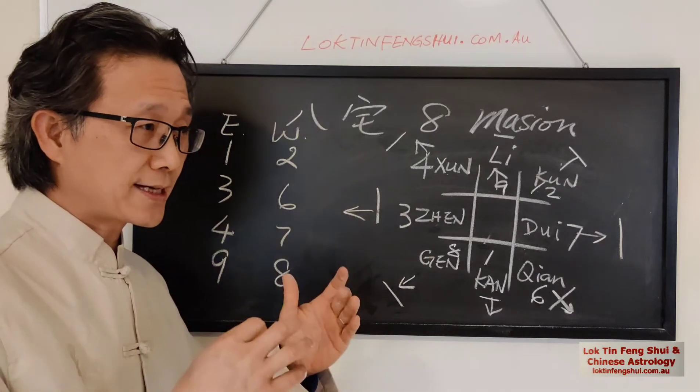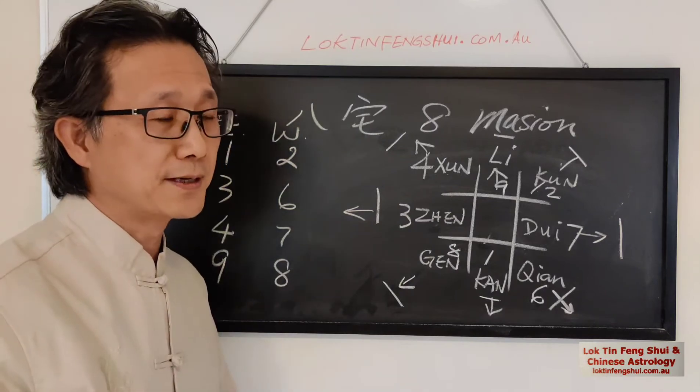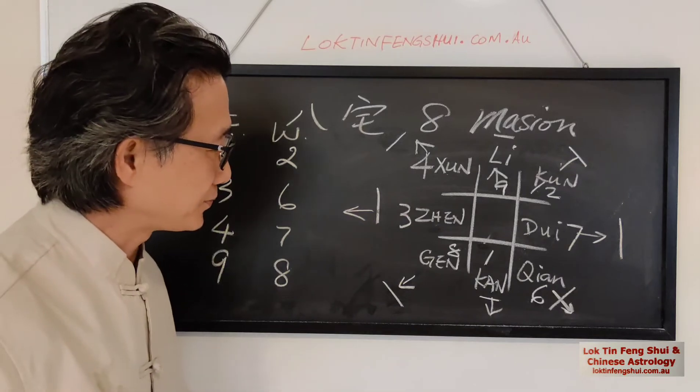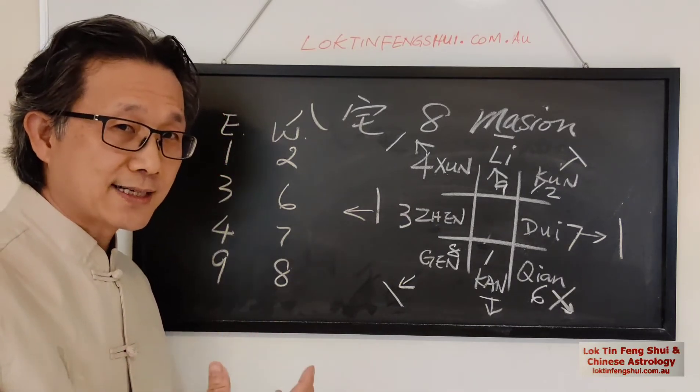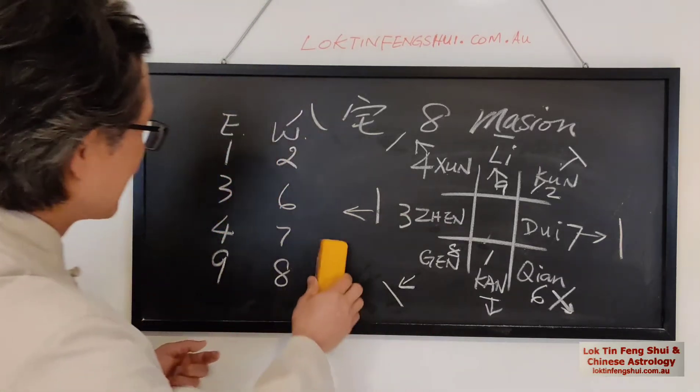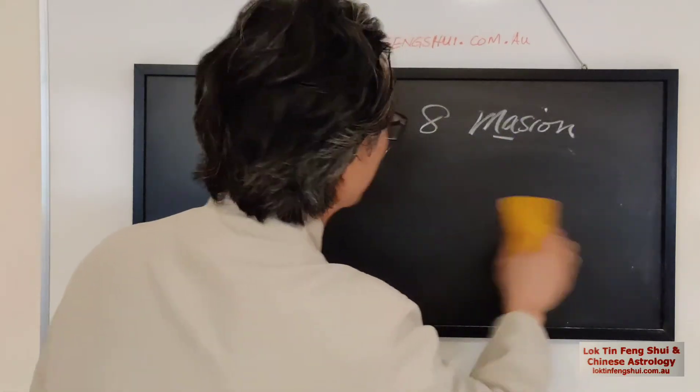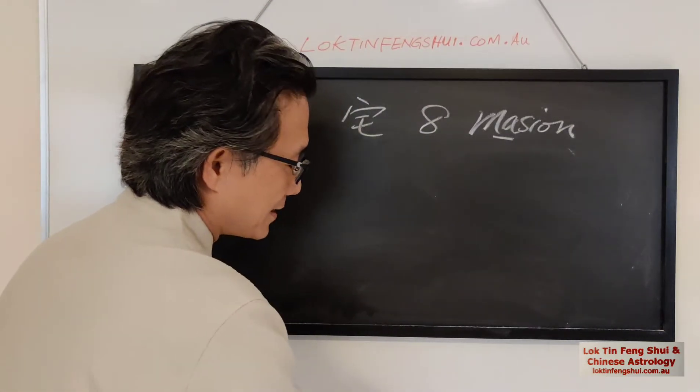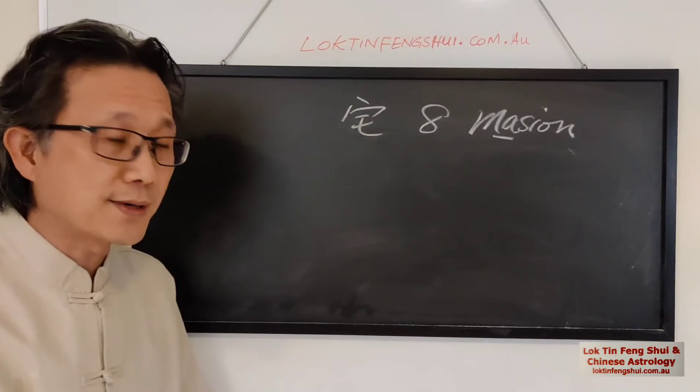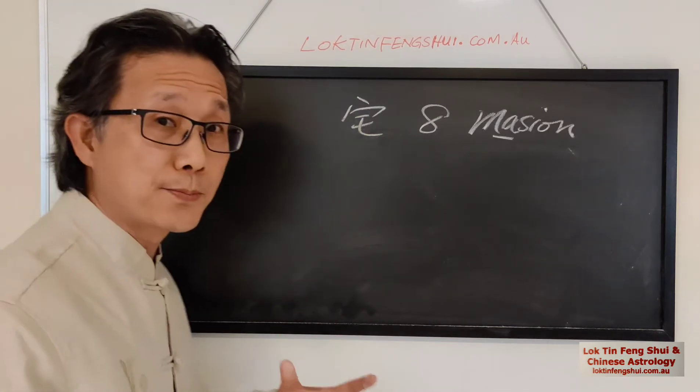And also they are putting each of the person, they assign a Gua number to see whether this person is the east group or west group or not. So you need to calculate your Gua number. So how do you calculate the Gua number? The Gua number is not difficult to calculate. If you Google Gua number or some other website, they will have your input, your year of birth, and then they give you your Gua number. So that's the easiest way to calculate. It's based on your birth year.